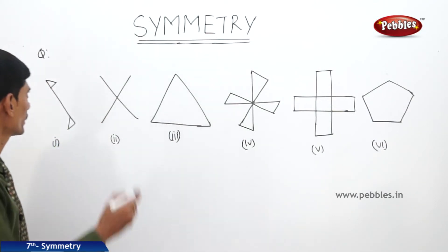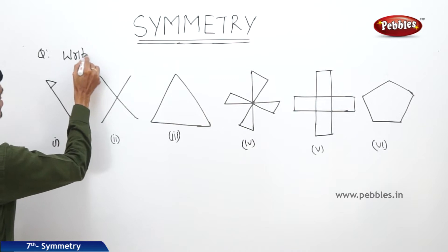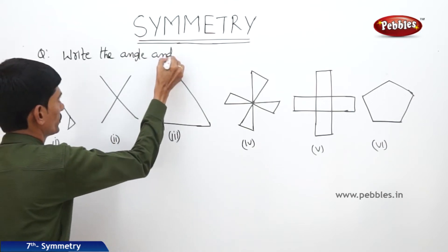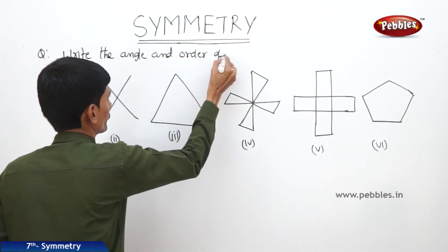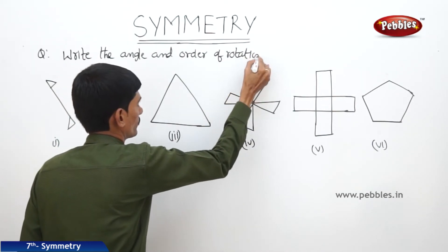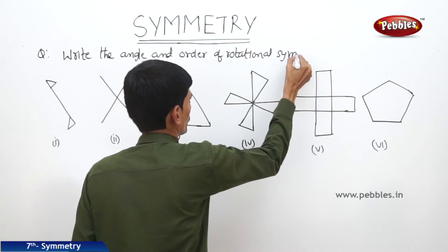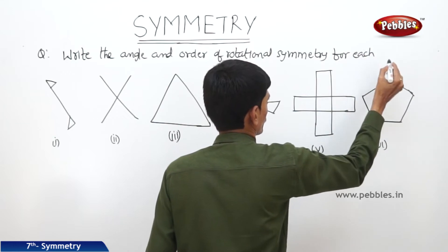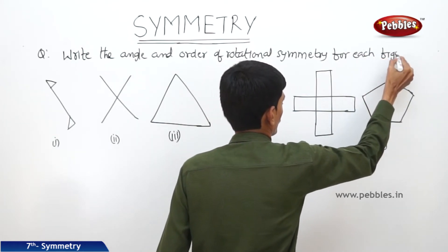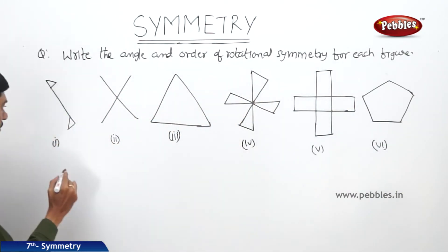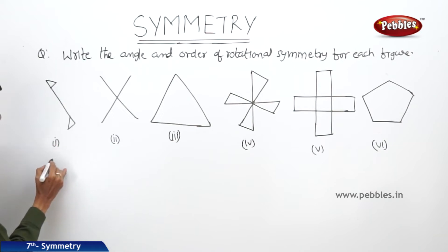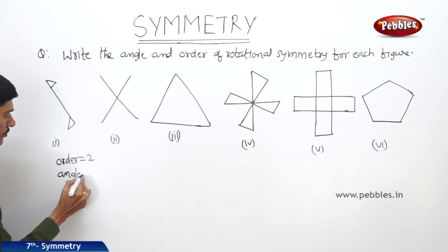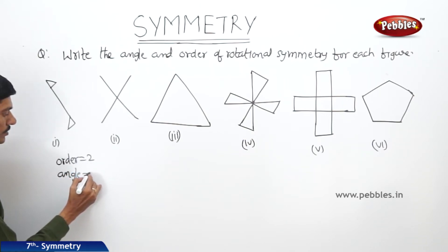Now let us see the next question. Write the angle and order of rotational symmetry for each figure. First, we write the order of rotational symmetry. The order of rotational symmetry is 2 in the first case. And the angle is 360 divided by 2, which is 180 degrees.